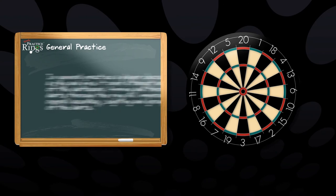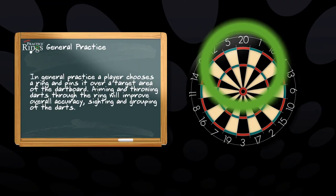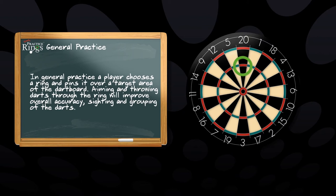In addition to game playing, the rings are also to be used for general practice. In general practice, a player chooses a ring and pins it over a target area of the dartboard. Aiming and throwing darts through the ring will improve overall accuracy, sighting, and grouping of the darts.